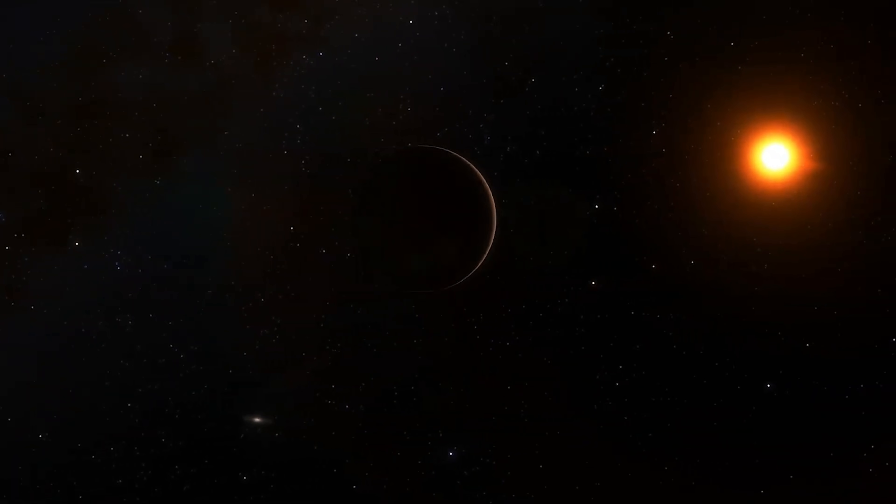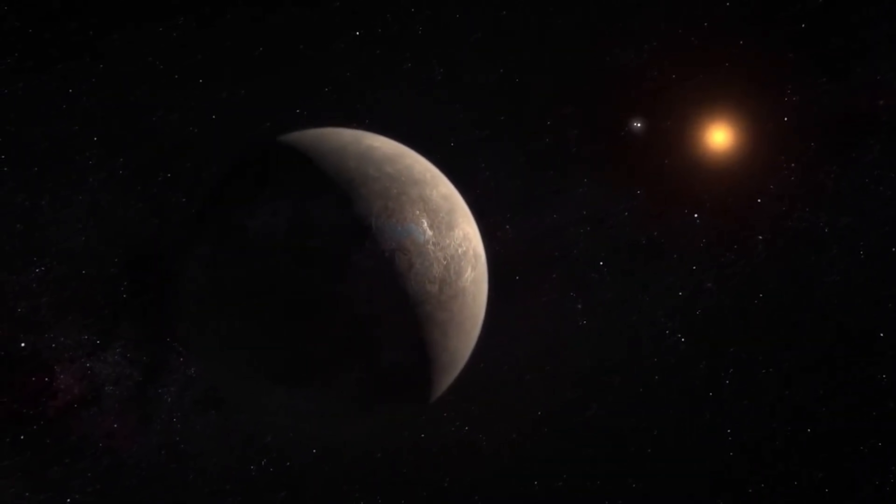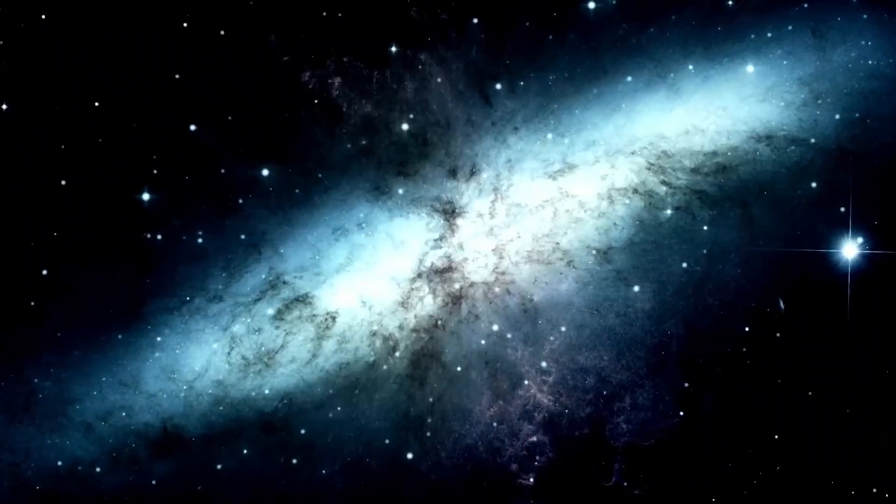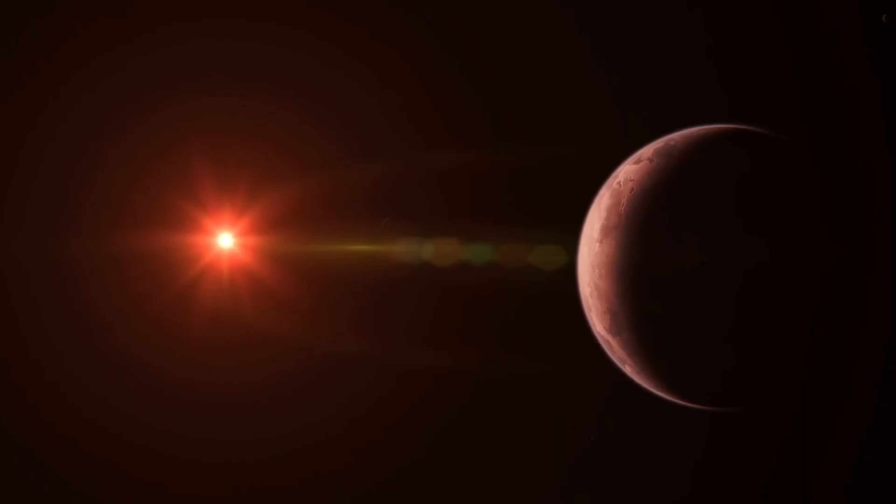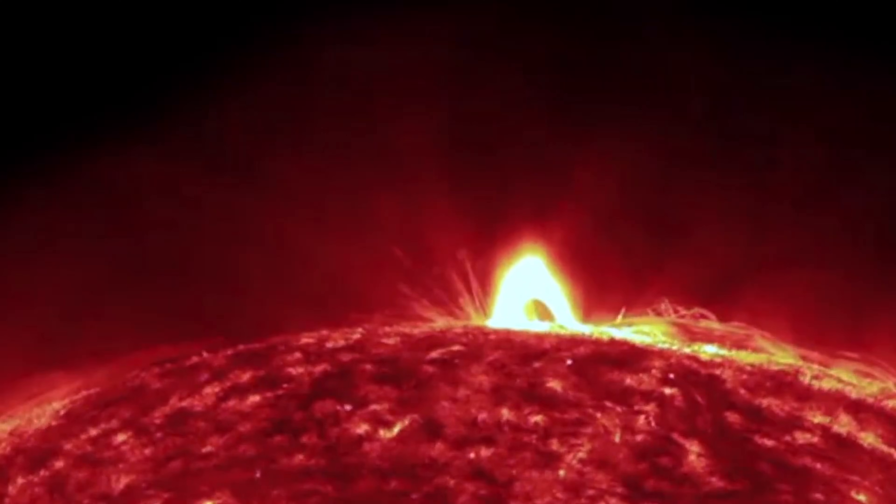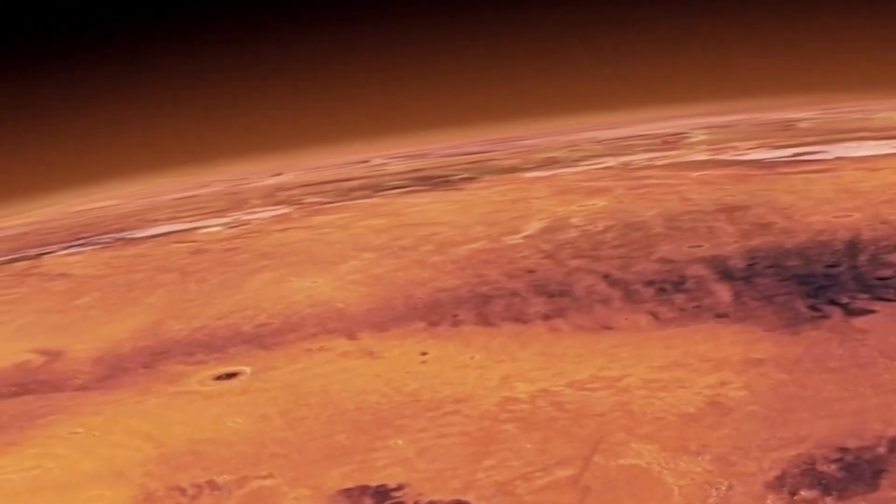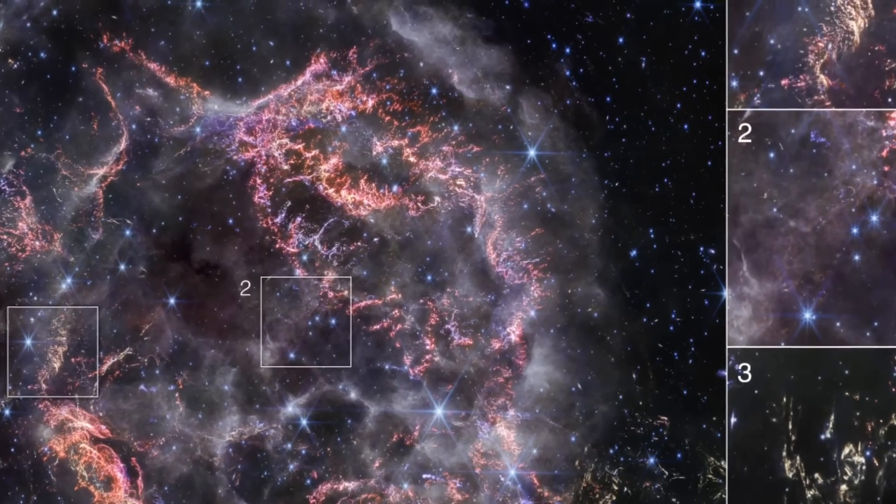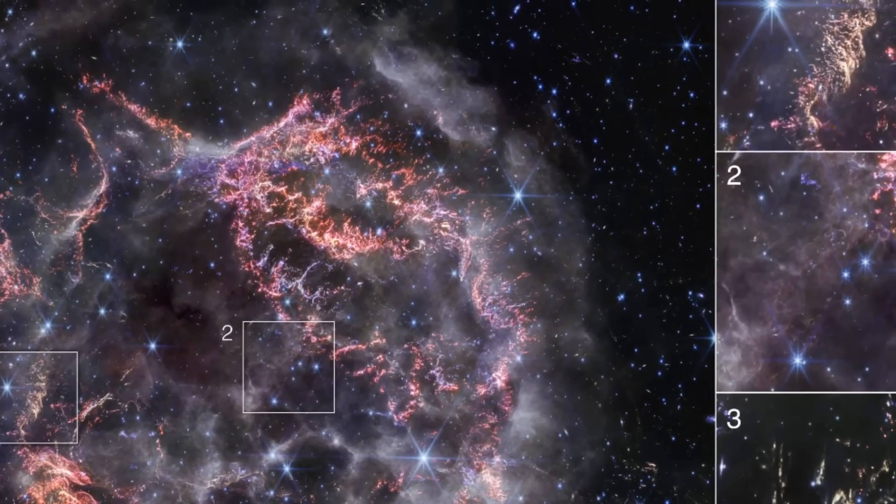Experts on the panel were quick to point out how Webb's infrared capabilities reveal galaxies that were previously invisible to us. The image shows galaxies whose light has been stretched by cosmic expansion, a phenomenon known as redshift. Webb's sensitivity allows it to look farther back in time than ever before, making this image a time capsule that allows us to observe the universe as it looked billions of years ago.